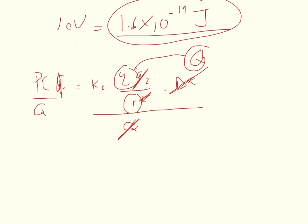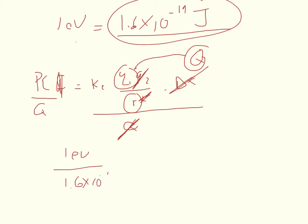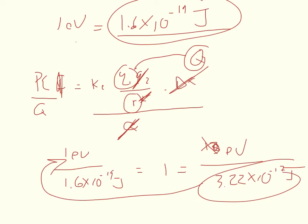So if that wasn't convoluted enough, we'll just set up a ratio. So one electron volt divided by 1.6 times 10 to the negative 19th joules is equal to one unit. And so I can set up another dimension on this side of the equation, and say that it is equal to some X number of electron volts divided by 3.22 times 10 to the negative 17th joules. And then I can just multiply this to the other side and find out what my X number of electron volts are.